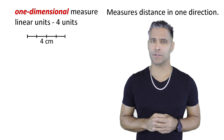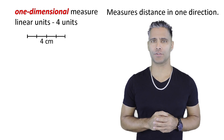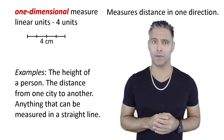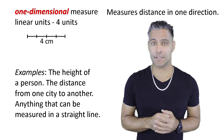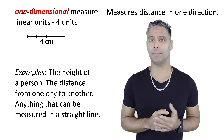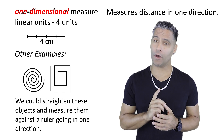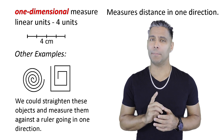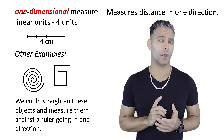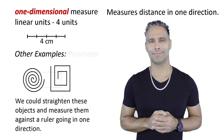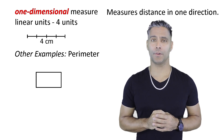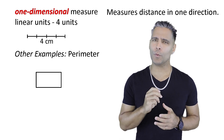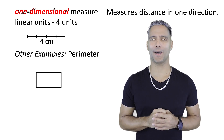An example of something that is one-dimensional is something that can only be measured in one direction, or a straight line. Examples of one-dimensional measures may be the height of a person, the distance from one city to another city, or anything that can be measured in a straight line. There are objects that are not shown in a straight line but are still one-dimensional because you could straighten them out and measure them against a ruler. Perimeter is another example of a one-dimensional measure — even though we see a two-dimensional shape, we are only measuring the distance of the line which forms the polygon.